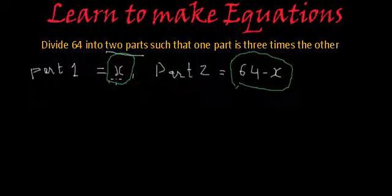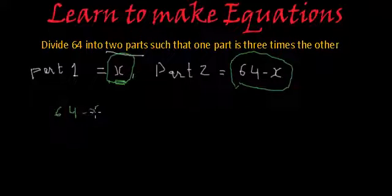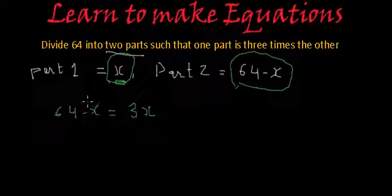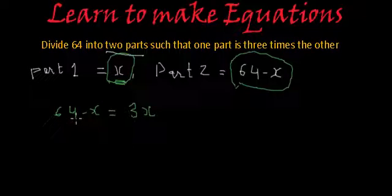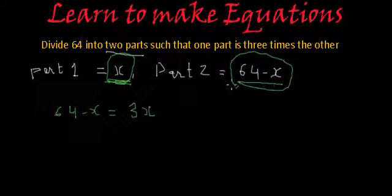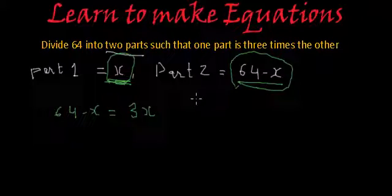So if we assume that x is the smaller part, 64 minus x will be three times x, because we have divided 64 into two parts. One is Part 1 which is x, and another is Part 2 which will be 64 minus x, and the relation between them is such that one part is three times the other.